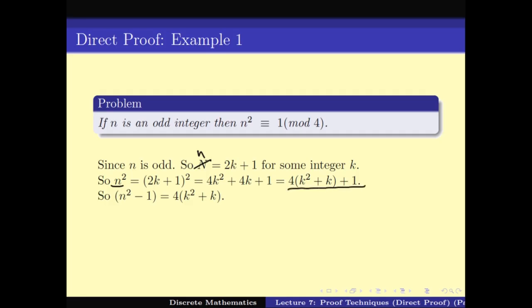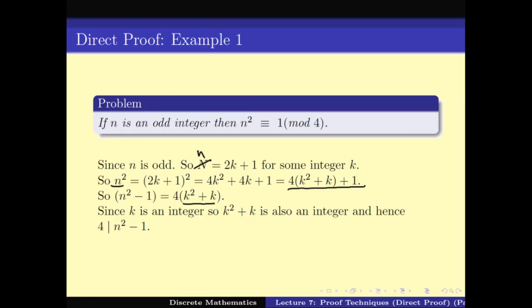By rearranging, we get n squared minus 1 equals 4 times k squared plus k. Since k is an integer, k squared plus k is also an integer, and hence n squared minus 1 is 4 times some integer — in other words, n squared minus 1 is divisible by 4, which is exactly what we mean by n squared congruent to 1 mod 4. This is a direct proof: we started with the assumption that n is odd, squared it using n equals 2k plus 1, and worked our way through to reach our goal.